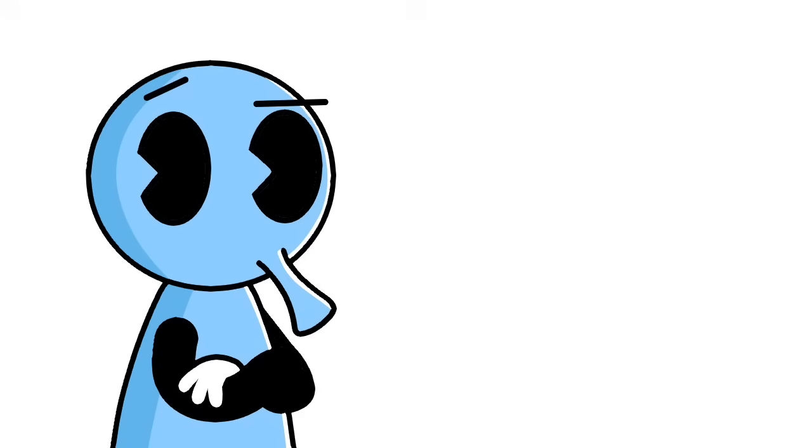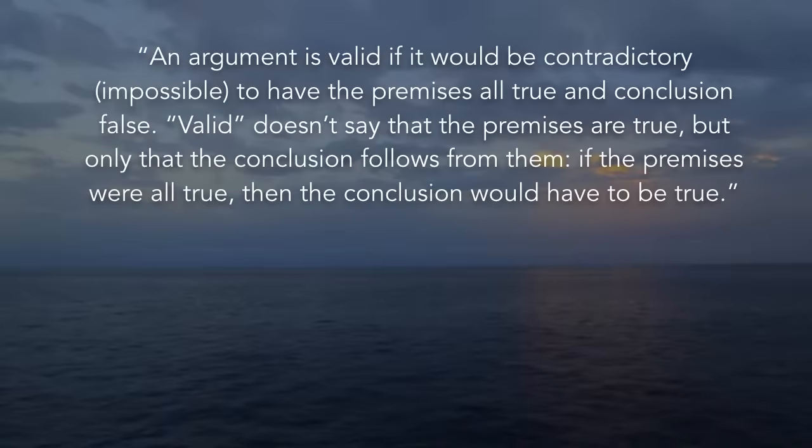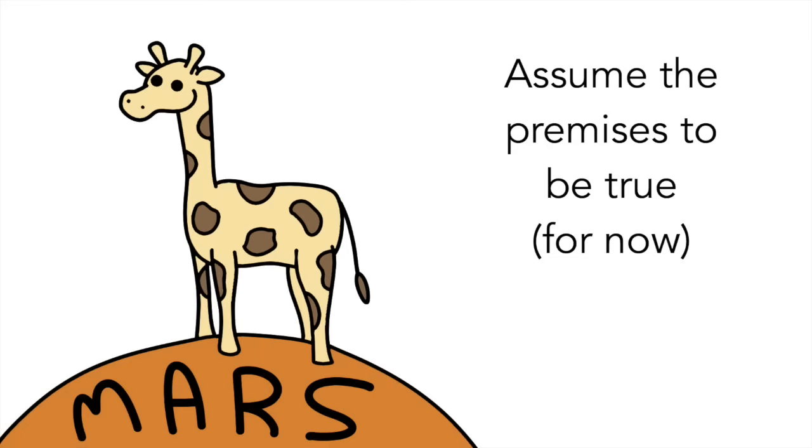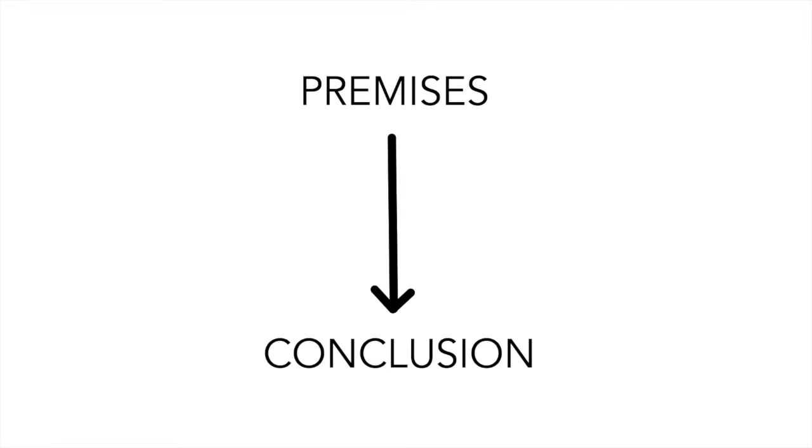So let's start with understanding what a valid argument is. The book states, An argument is valid if it would be contradictory, impossible, to have the premises all true and the conclusion false. Valid doesn't say that the premises are true, but only that the conclusion follows from them. If the premises were all true, then the conclusion would have to be true. So to test for validity, we first don't concern ourselves about whether the premises are true. We kind of just assume them to be true for now. So even if we get ridiculous sounding premises like all giraffes live on Mars, we don't worry about whether it's true. What we do worry about is the relationship to these assumed true premises and the assumed true conclusion, to see if the conclusion necessarily follows from the premises.